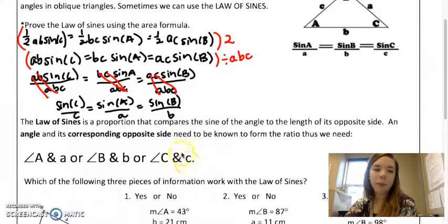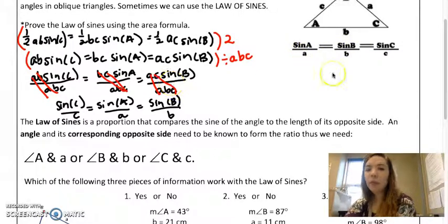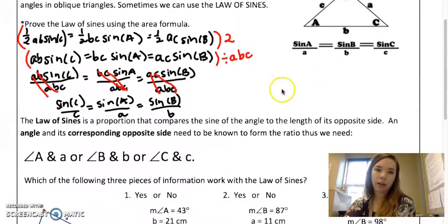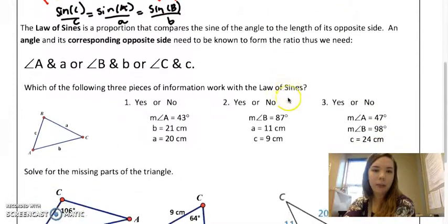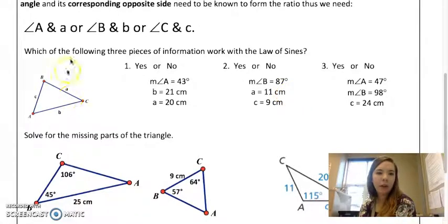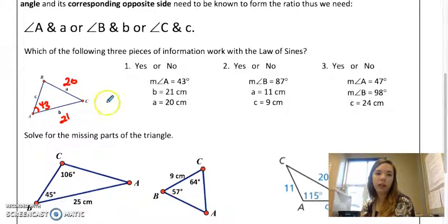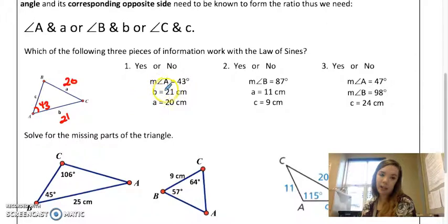To do this you need to know three items to solve for one. Not every single problem will work with the Law of Sines. Let's take a look at some examples. If I know angle A is 43, little a is 20, and little b is 21, can I use the Law of Sines? The answer is yes, because I have the angle A and little a. You need at least two of the same, and then I could solve this for angle B and keep going. So this one's a yes.